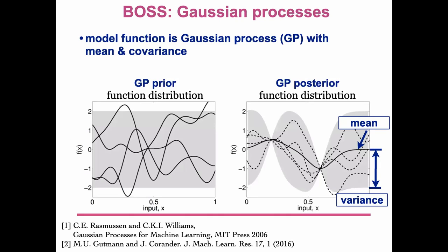Under the hood, we use a Gaussian process as the surrogate model. A Gaussian process is a distribution over functions characterized by mean and covariance. Without any prior information, you can have any function — the gray region represents uncertainty, telling you basically you know nothing. As soon as you have some data, you limit the possible functions that must pass through the data points, giving you a mean and a variance describing your process.